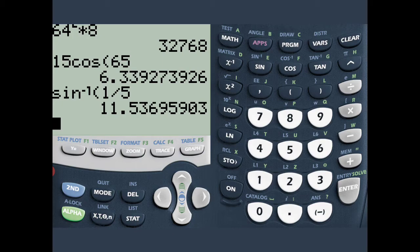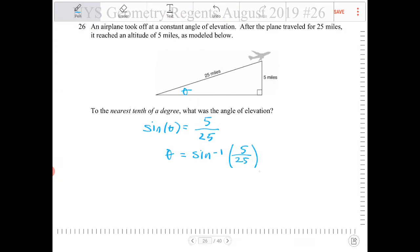And that's 11.536 or 11.537. So that's 11.537. And it says to round to the nearest tenth of a degree. So it's 11.5. There you go.